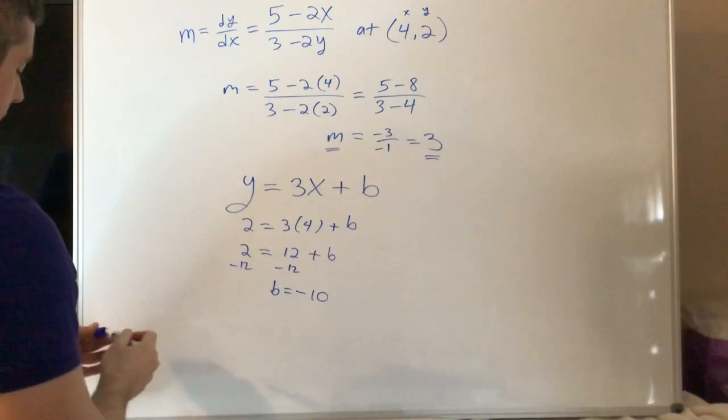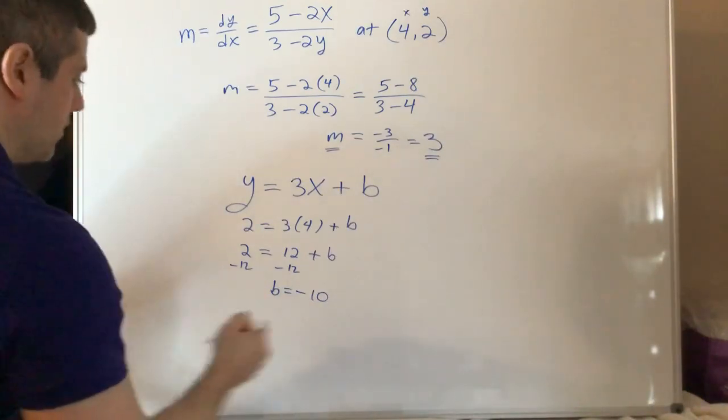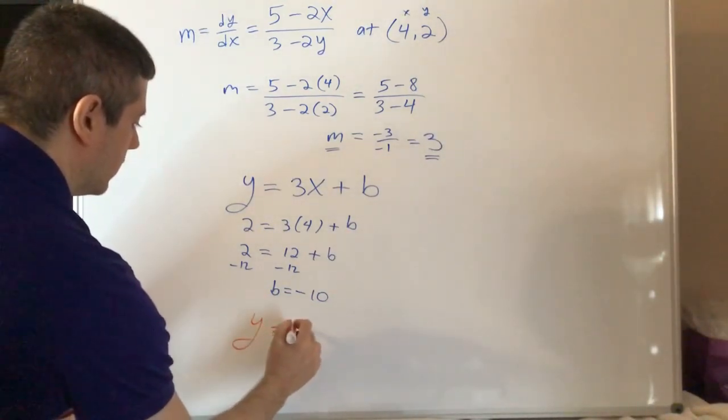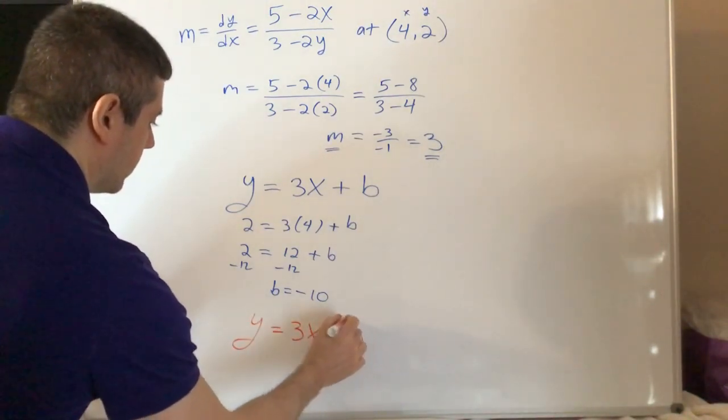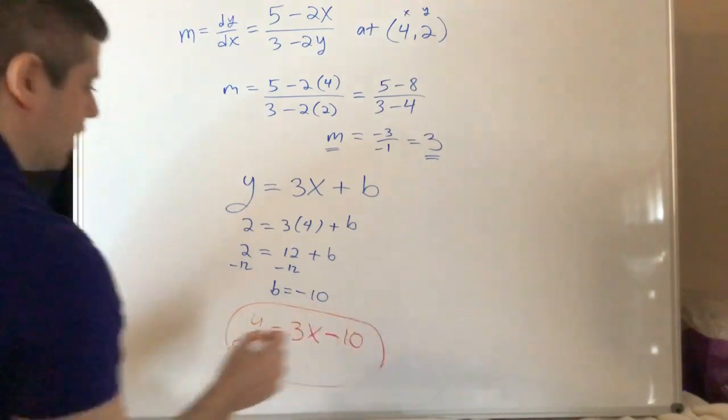And remember the final step, where I said done. You want to write your line down. So it's 3x take away 10. That is the equation of your tangent line.